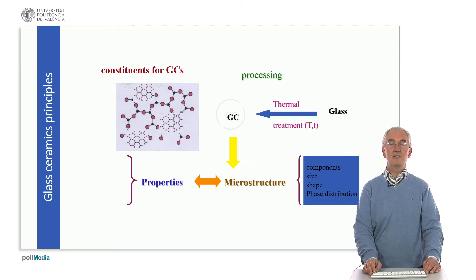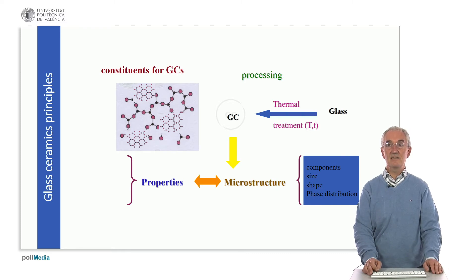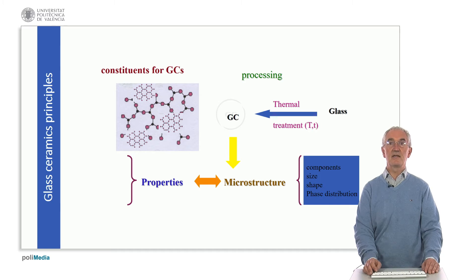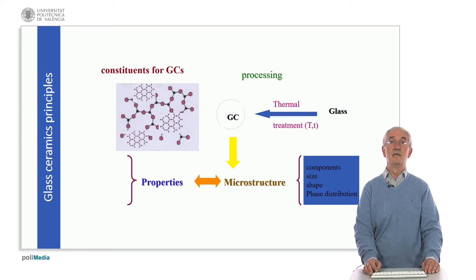The basic constituents of glass ceramics are obviously the glass matrix and the different crystalline materials, which are distributed evenly within the matrix. Controlling their size and distribution achieves the desired effect. By controlling the position, size, and distribution of these crystals within the glass microstructure, we control the properties.